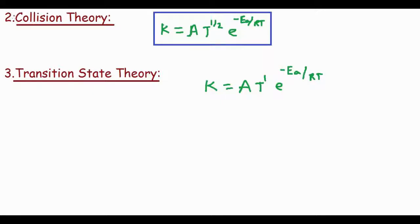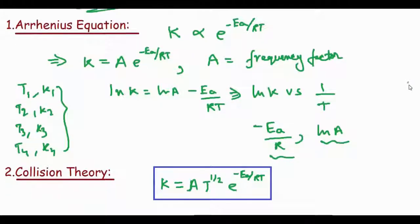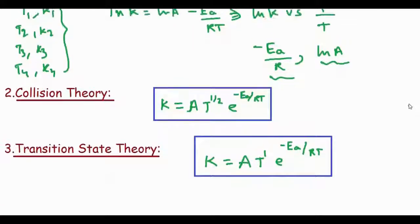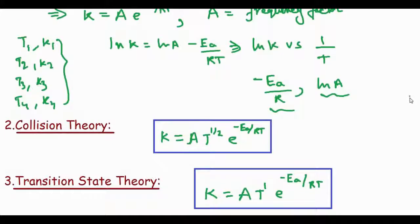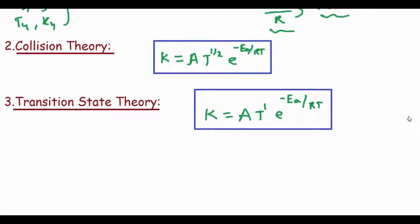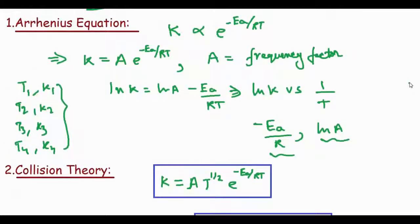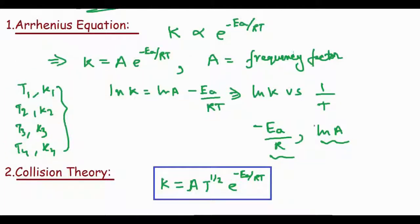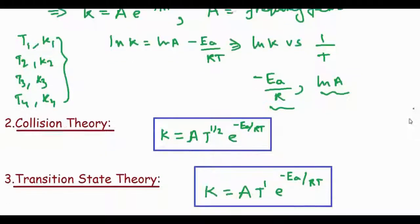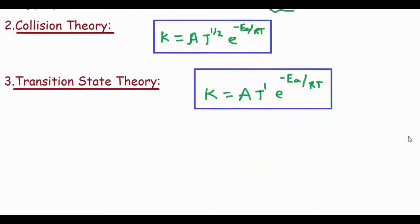These three equations—Arrhenius equation, collision theory, and transition state theory—are used to predict the rate constant when temperature is variable. In engineering practice, the Arrhenius equation is most commonly used, but collision theory and transition state theory are also applicable in certain cases.